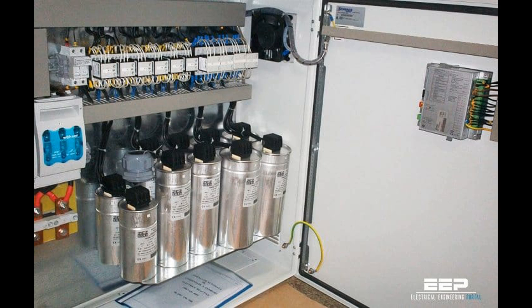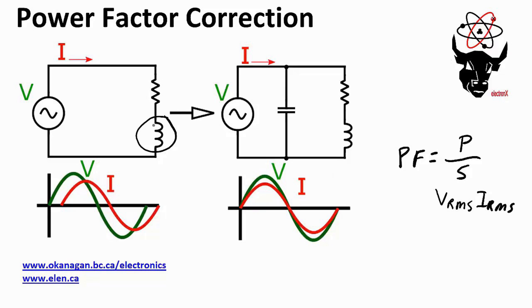Variable capacitors are well-suited for applications with dynamic load conditions where power factor correction requirements may vary over time. They provide effective and responsive power factor correction under changing operational conditions. They are typically controlled by capacitor banks equipped with switching devices that adjust the capacitance settings based on the detected power factor and load conditions. Variable capacitors require proper sizing, installation, and maintenance, along with regular inspection and monitoring of the capacitor bank and associated control systems.